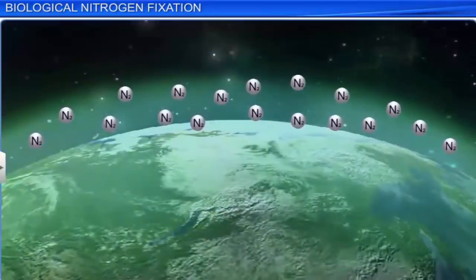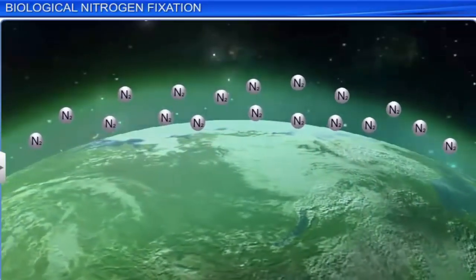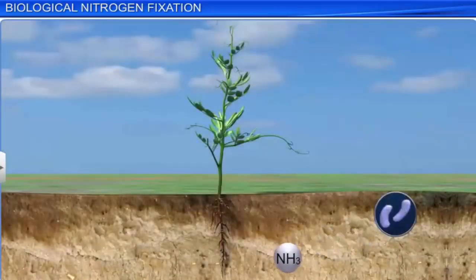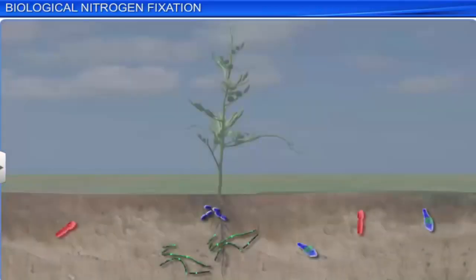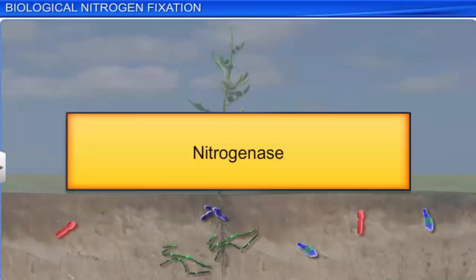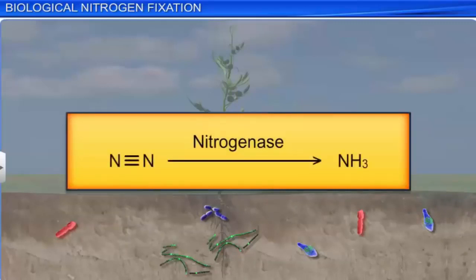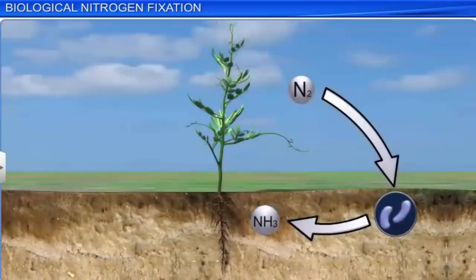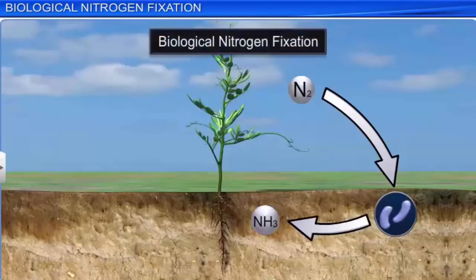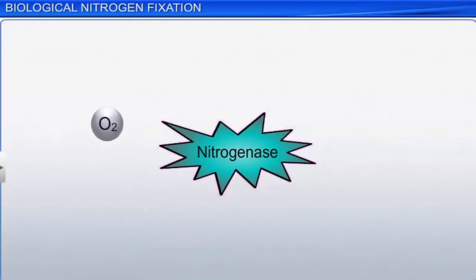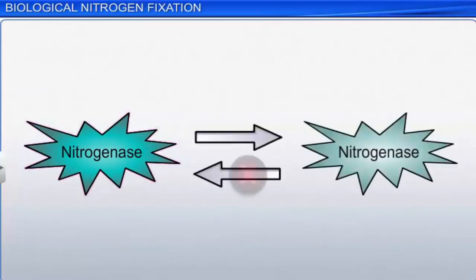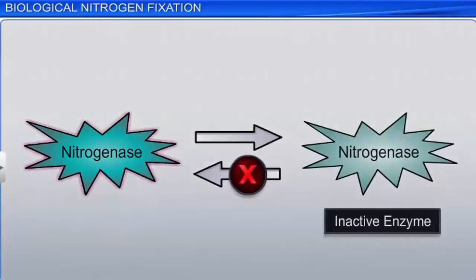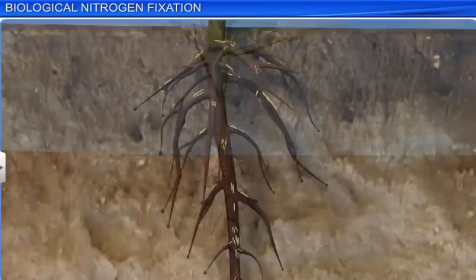In the atmosphere, nitrogen is available in diatomic form. Only a few microbes can fix this nitrogen. These microbes have a special enzyme called nitrogenase, which reduces nitrogen to ammonia. The process by which these living organisms fix atmospheric nitrogen by converting it to ammonia is called biological nitrogen fixation. Nitrogenase is sensitive to oxygen; even low concentrations of oxygen can make it irreversibly inactive. Microbes that possess this enzyme are called nitrogen fixers.